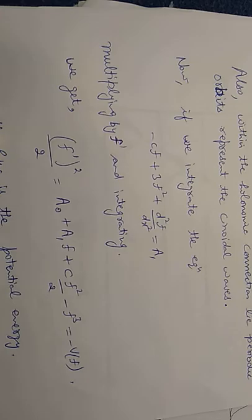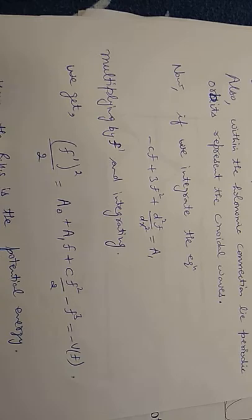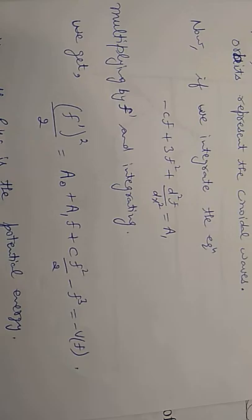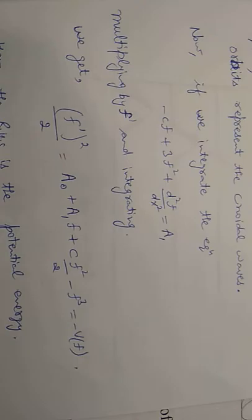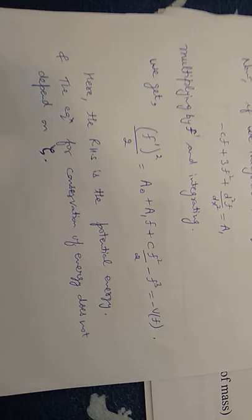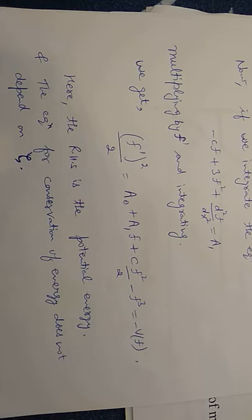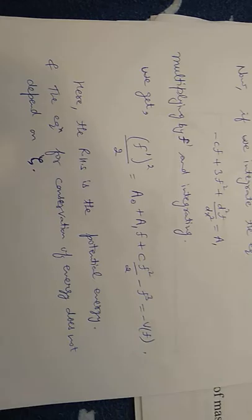Within the homoclinic connection, periodic orbits represent the cnoidal waves. If we integrate the equation minus cf plus 3f² plus d²f/dx² equals a_1 and multiply by f' and then integrate, we get (f')²/2 equals a_0 plus a_1 f plus cf²/2 minus f³ equals minus V(f), where a_0 is the constant of integration. The right-hand side is the potential energy, and the equation for conservation of energy does not depend on chi.